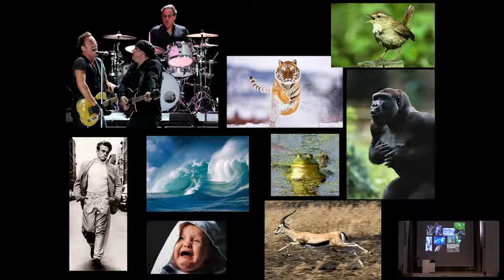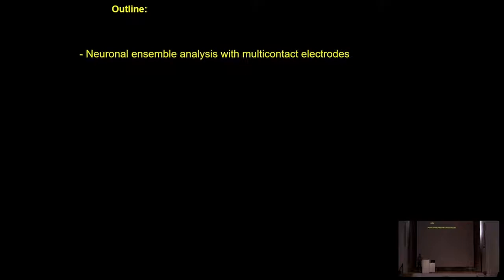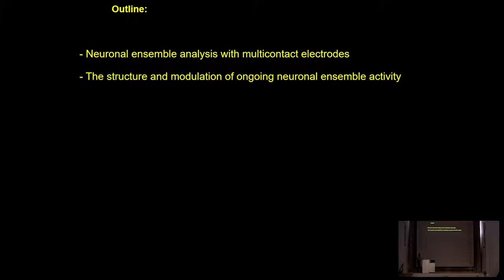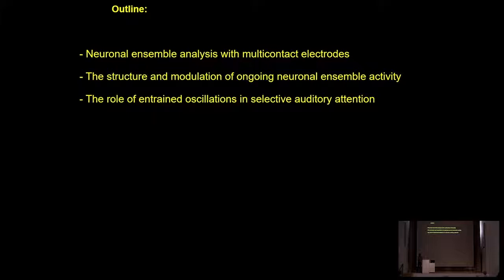These mechanisms are what I will talk about most, primarily in the auditory cortex of macaque monkeys. In the first part of the talk I'll briefly describe the recording technique we use, then discuss the structure and modulation of ongoing neuronal ensemble activity and the role of oscillatory entrainment in auditory selective attention. In the second half I'll address why this is relevant to speech perception.